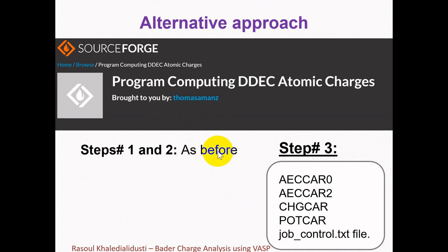The only things we need to do is follow steps one and two as before, and then we have one remaining step: place the core charge density AECCAR0, the valence charge density AECCAR2, the CHGCAR file, and POTCAR files into a directory along with the job_control.txt file, and run the program. I will explain how to make the job_control.txt file.